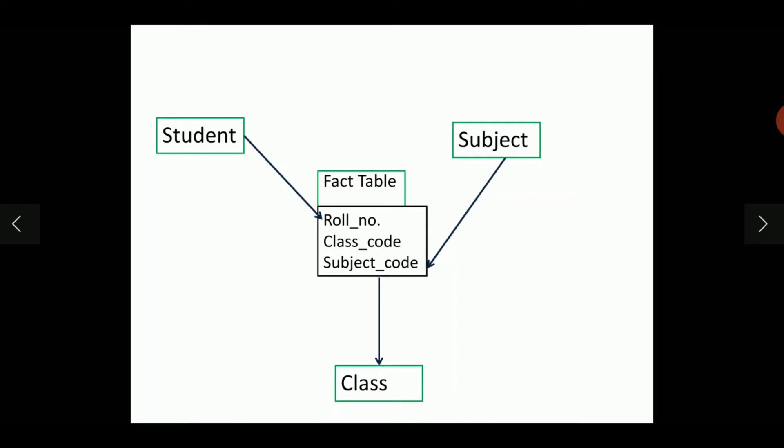Let's see the example. Here, we have the dimension tables student, subject and class. We can define the dimension student with the fields roll number, student name, student address, etc.